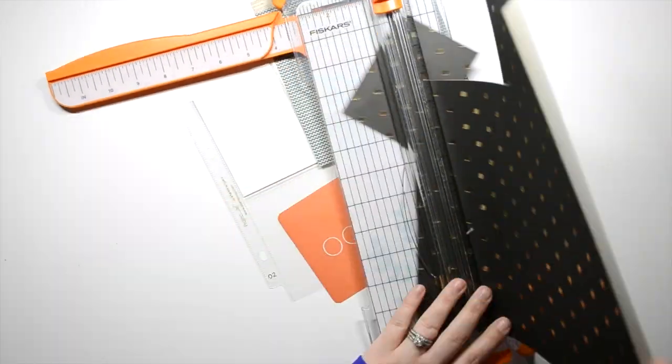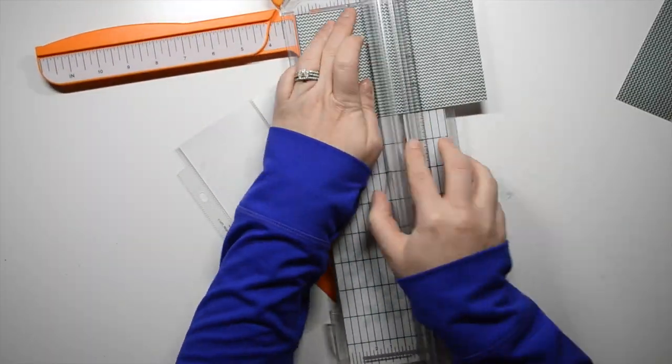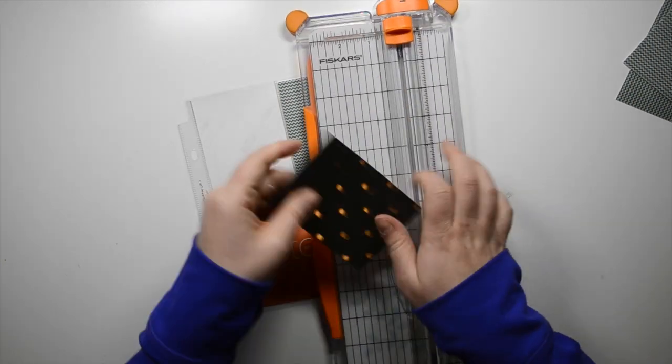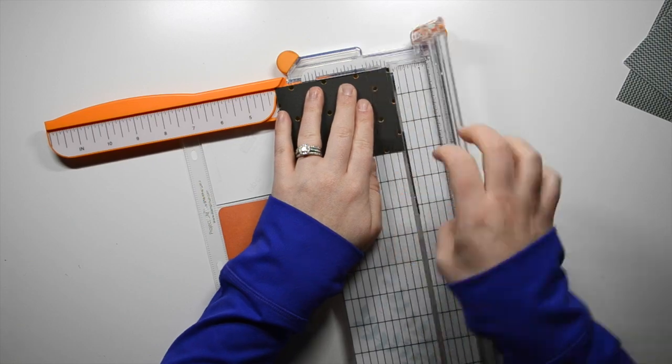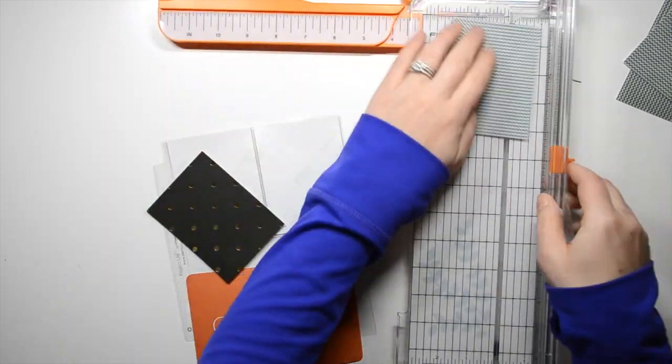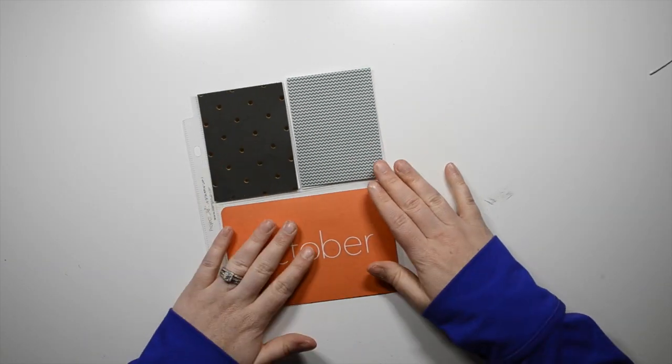For instance, like this one, it has the two 3x4s on the top and the 4x6 on the bottom, and then they have like the opposite of that and all that kind of stuff. Just offers more variety than the simple stories ones.